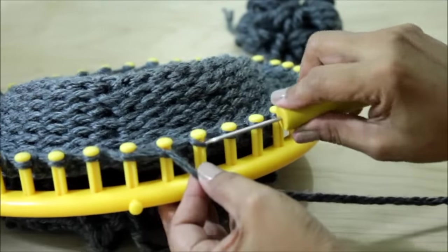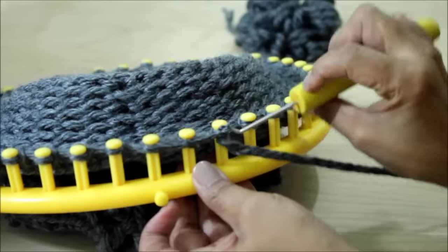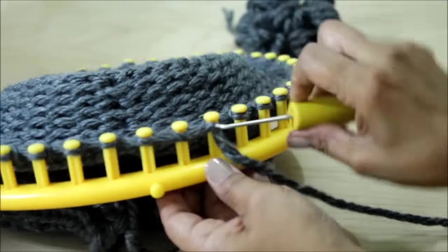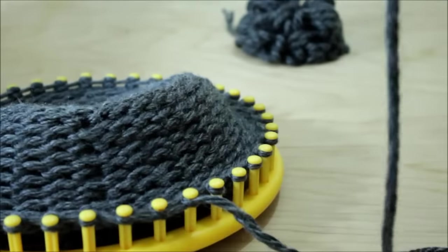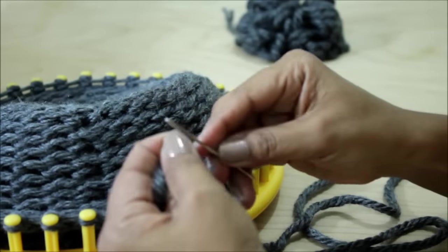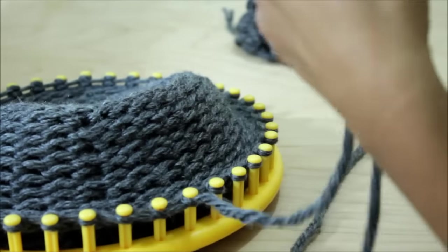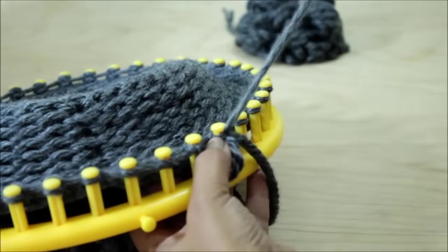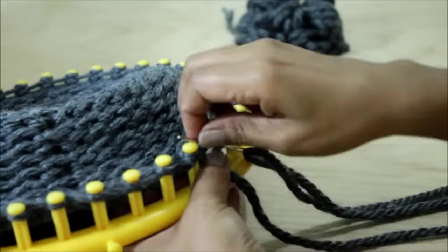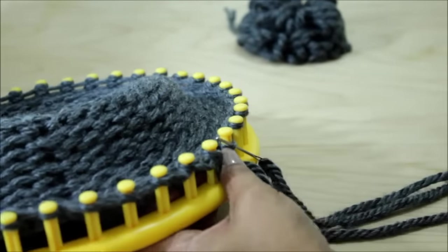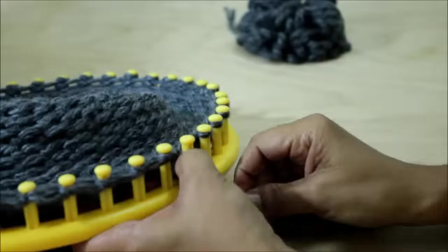So you take the hook from the top, scoop up the yarn and feed it completely through the loop. Now personally, I like to use my needle instead. Same thing except you're going to come from the bottom and go upward. Continue until you've done every loop.